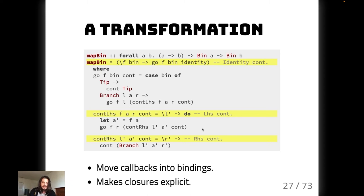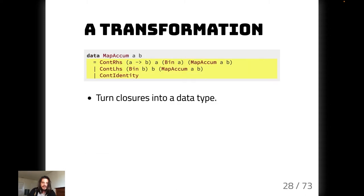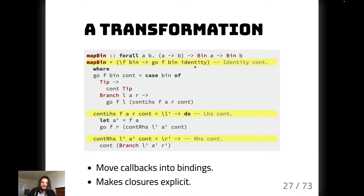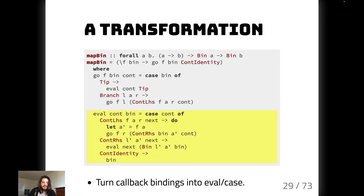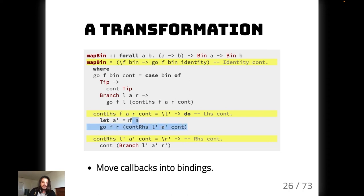Our next step is to take these closures and turn them into a data type. We have our identity continuation to start, a left-hand side continuation that goes down the left side of the tree, and a right-hand side continuation. We turn that into a sum type — each one with all the values they capture put into the data type. `ContIdentity` is kind of like a nil value that tells us it's done.